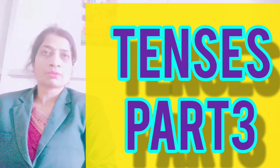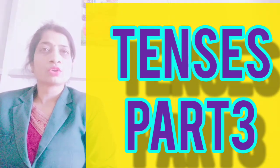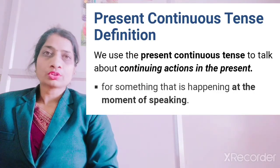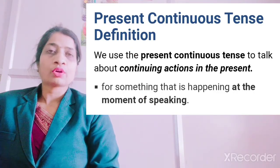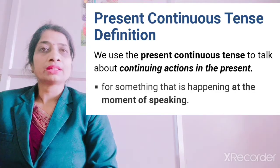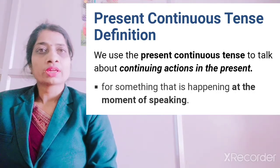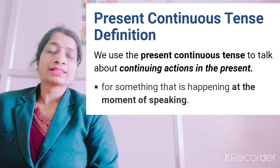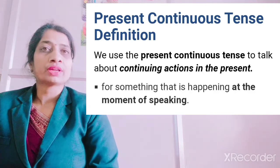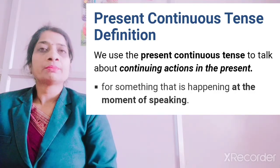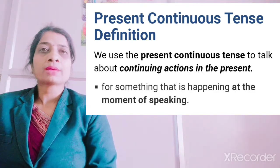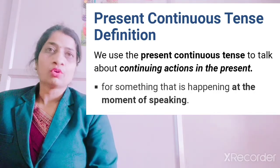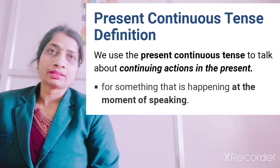First of all, let's study about present continuous tense. We use present continuous tense for the actions that are happening in the present. It is used for something that is happening at the moment when we are speaking — it means jab mein aapse baat kar rahi hoon, us samay jo action chal raha hai, woh present continuous tense mein aata hai.